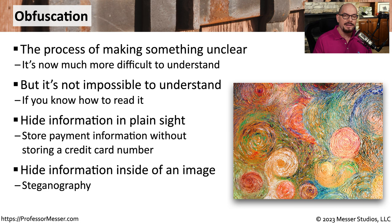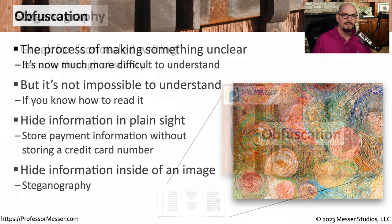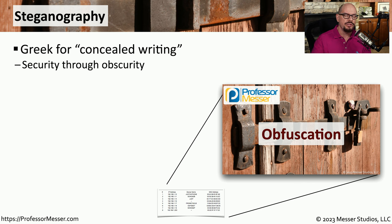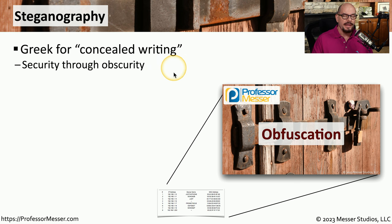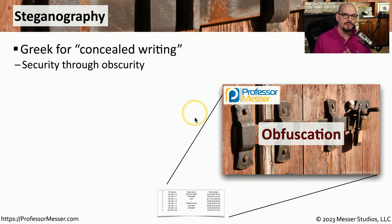One very popular kind of obfuscation is steganography, where we can hide information within an image. Somewhere in this image is data that we would be able to recover if we knew how it was originally stored. Steganography has its roots in the Greek language and stands for concealed writing. We often refer to steganography as a type of security through obscurity, which means that if you know the process used to hide the data, you can very easily recover it — and that's why security through obscurity is not really security at all.